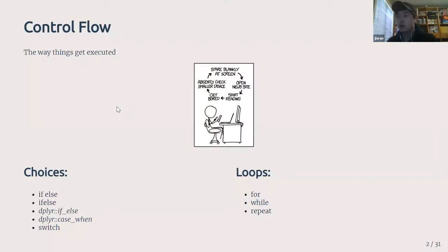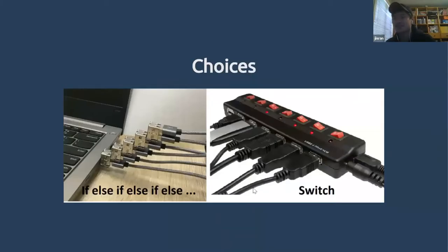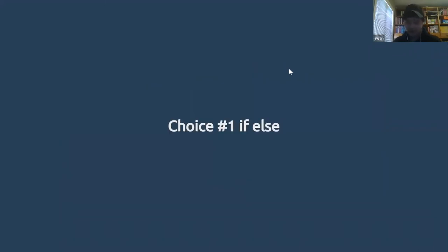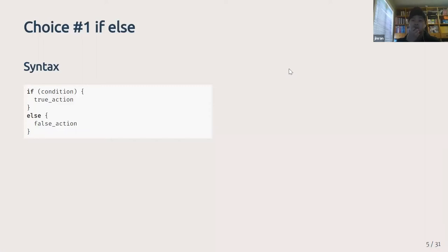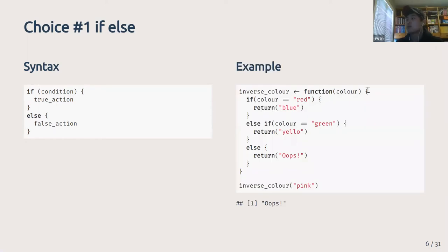I'll start with an xkcd. Control flow is how things get executed — whether you start with a loop or a choice. You start with an input, and based on the evaluation of that input you move to the next steps, loop, or stop. Here's a meme: if/else versus switch. The basic syntax of if/else: you evaluate a condition and perform a true action or an else action. For example, inverting a color — if it's red you return blue or green, and if it's neither you return something else.